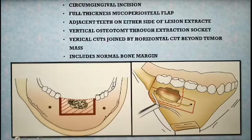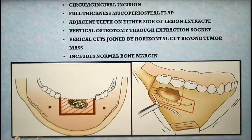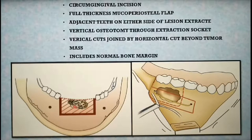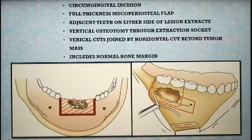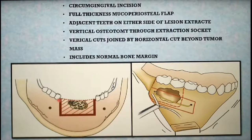Let's see how the surgical procedure is carried out. There are two approaches: intraoral and extraoral. In the intraoral approach, a circumgingival incision is taken along the necks of the teeth, including one or two teeth on either side of the involved teeth. For example, if the tumor involves the central and lateral incisors in the anterior mandible, the resection will include the canine and first premolar on either side — in total, eight teeth are involved in the resection.